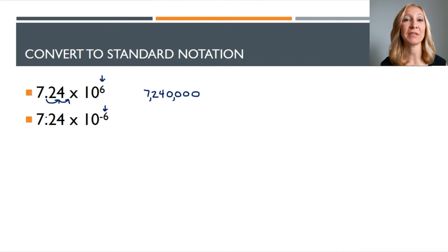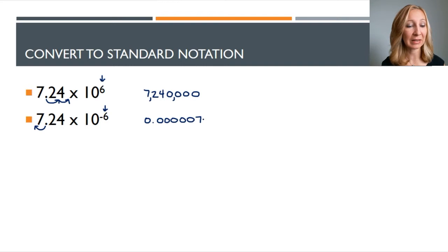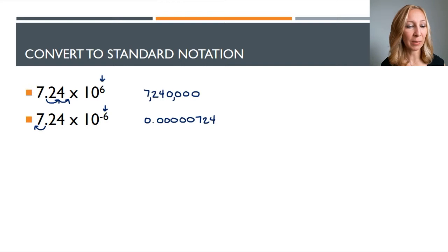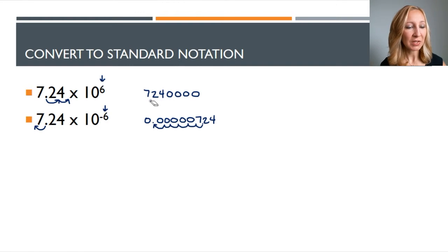Now we have the same number seven point two four, but this time we're multiplying it by ten to the negative sixth. If you remember your math rules, essentially what we're doing is dividing seven point two four by ten six times. To do this, we move the decimal to the left six places, since every time we move it left we're dividing by ten. So we get point zero zero zero zero zero seven two four — this is a very small number because we're dividing by ten so many times.